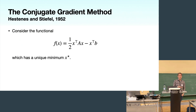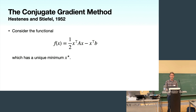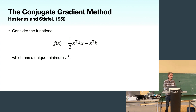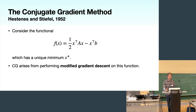One of the most famous iterative methods, still widely used today, is the conjugate gradient method. A nice way to motivate CG is to think of it as a kind of modified gradient descent. If we consider the quadratic functional f(x) = ½x^T A x − x^T b, taking its gradient shows it has a unique minimum at X*, the true solution. So we might try to find that solution by minimizing this functional using gradient descent, and CG arises from doing a modified gradient descent on this functional.